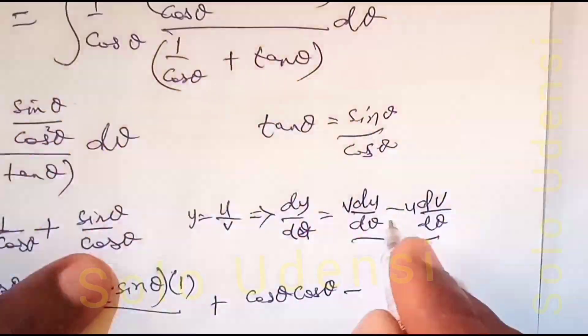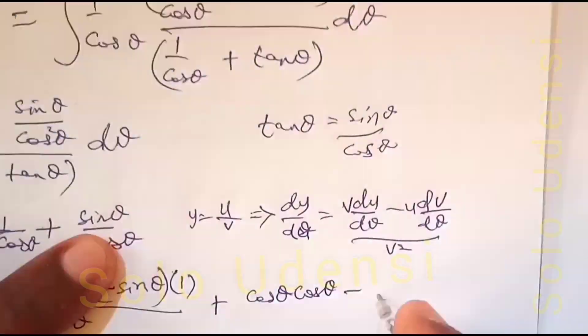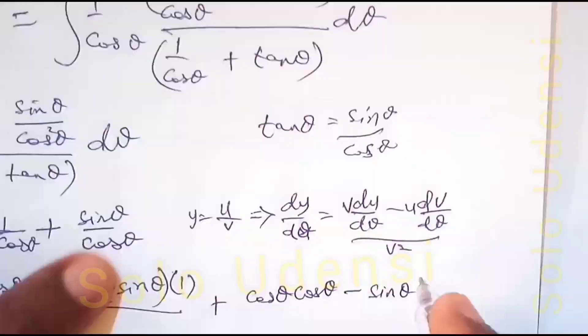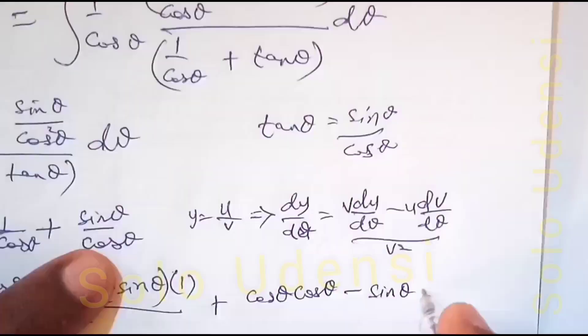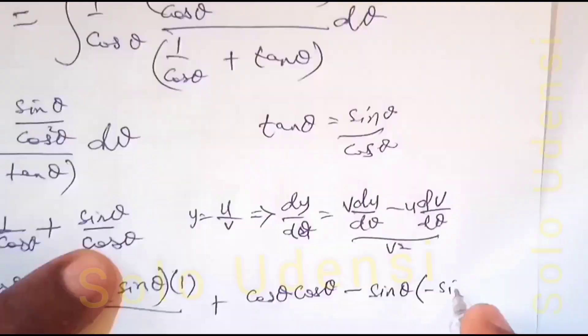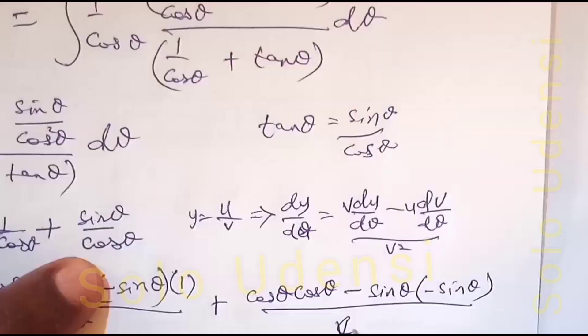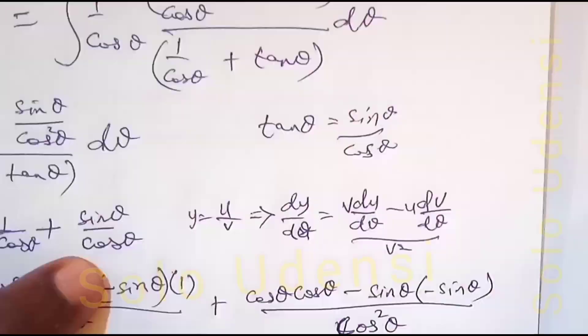Then minus u, which is sin theta, and dv/dθ is minus sin theta. And v squared is cos squared theta.